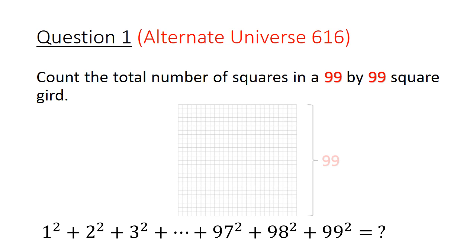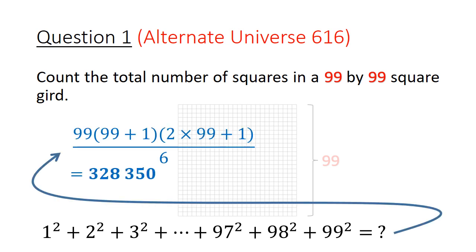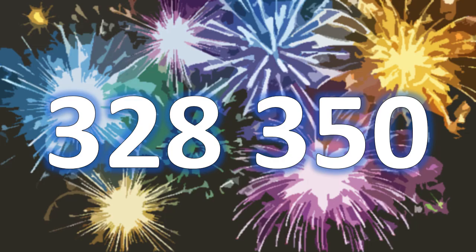After this long detour, let's go back to that alternate universe question. We can now evaluate this sum using our sum of square formula. This will give us a result of 328,350. So, did you get the answer?